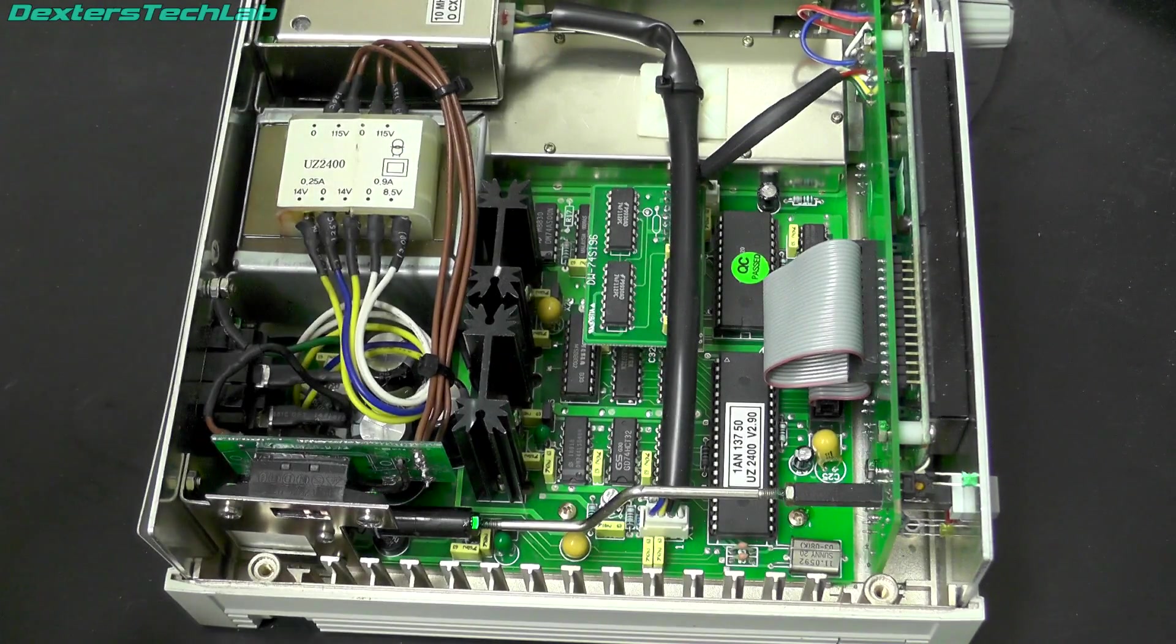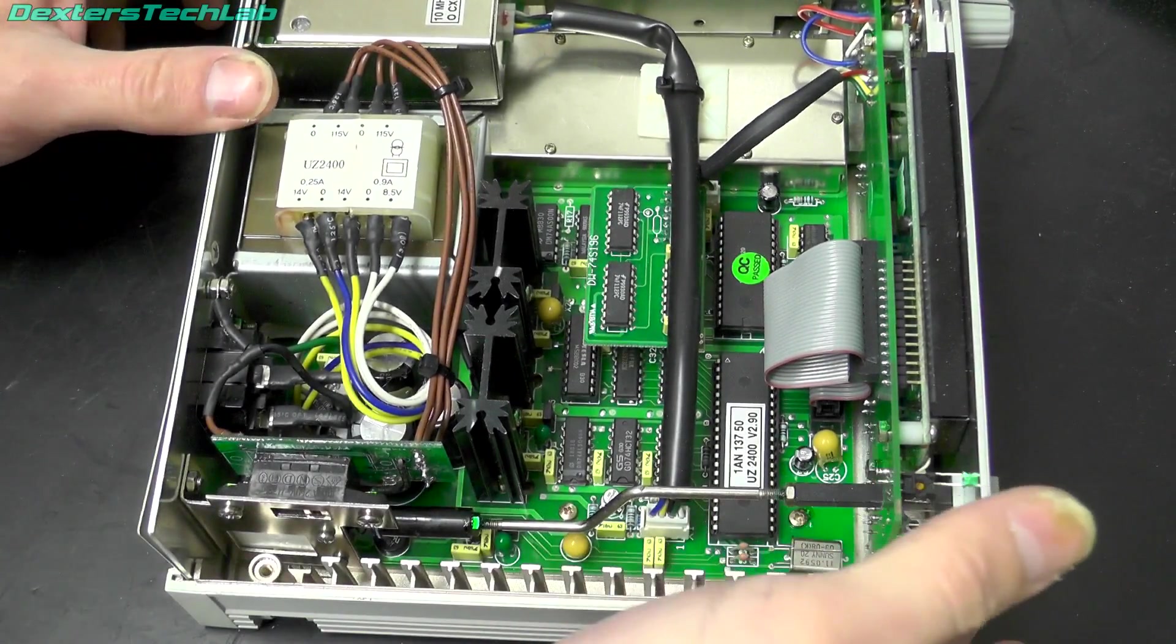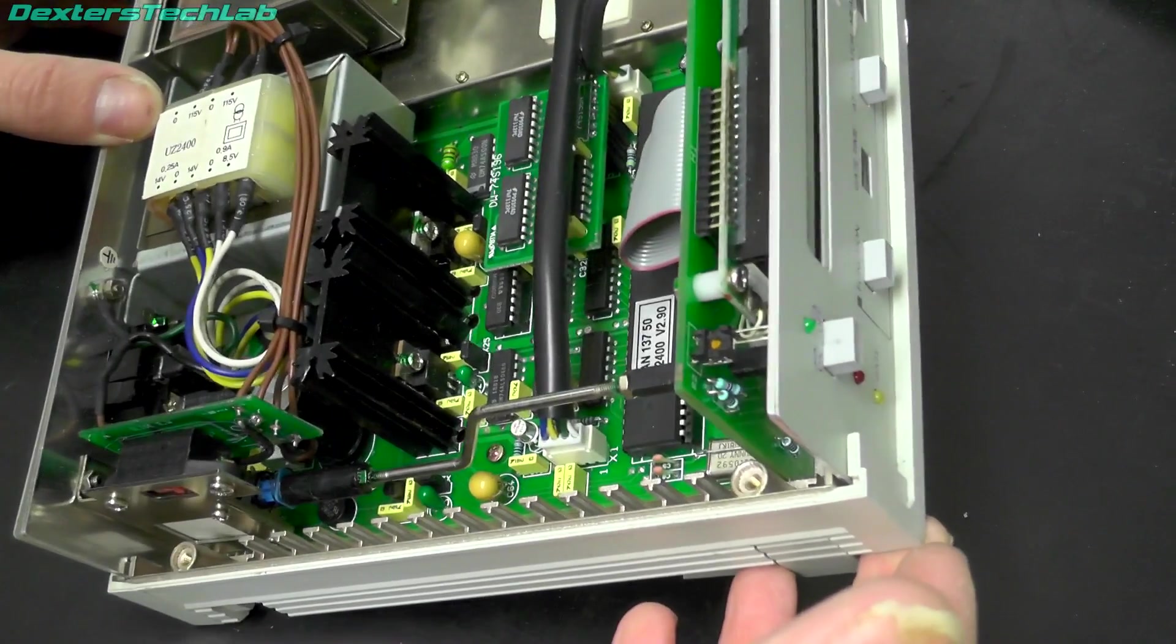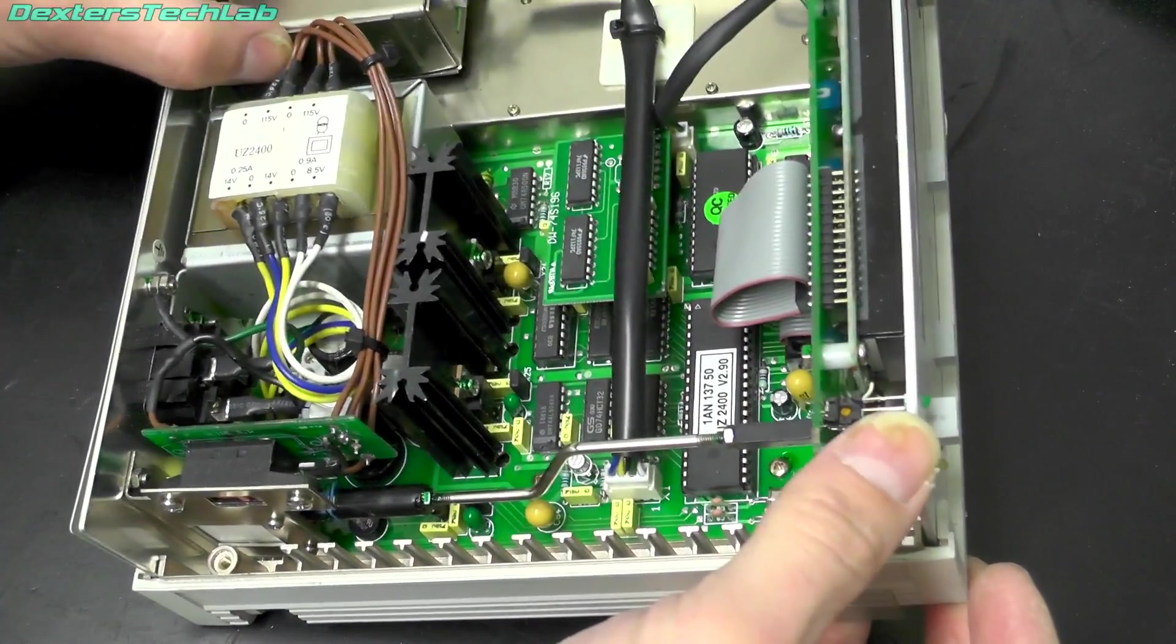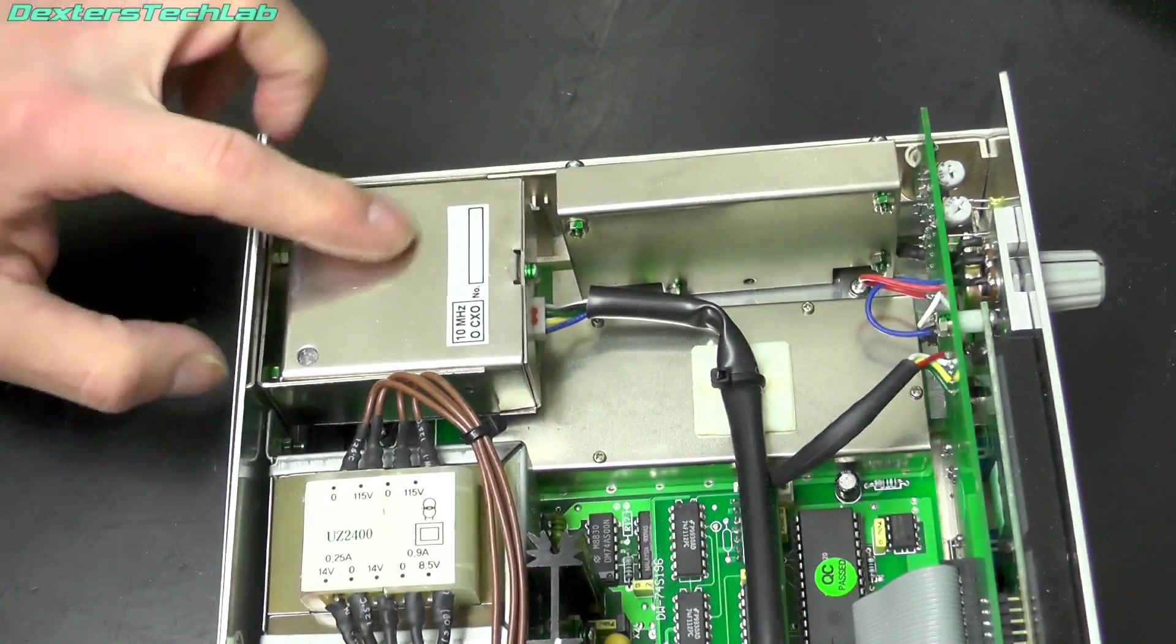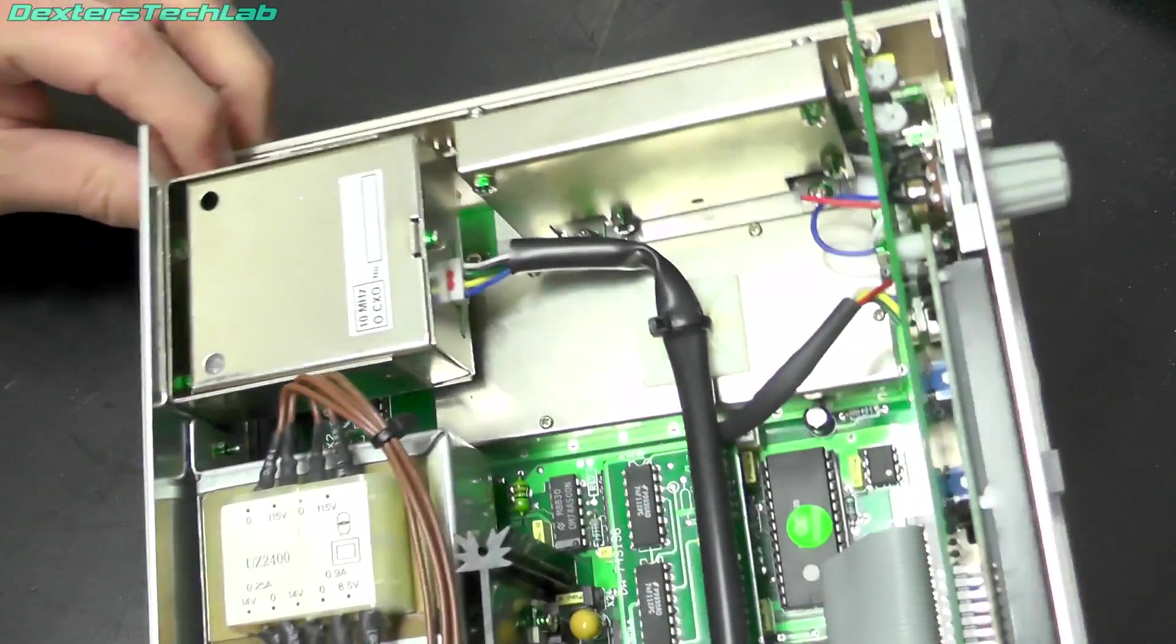Right, so we've got the lid off. It does certainly look a bit old school. It looks all through hole stuff. We've got a transformer. We do have an oven oscillator there. 10MHz OCXO.